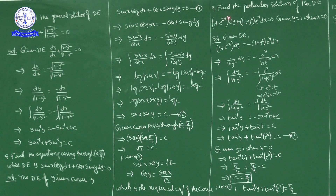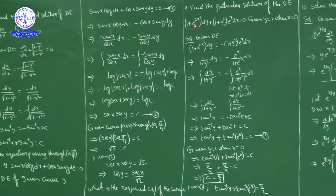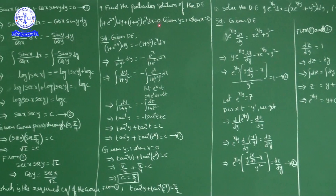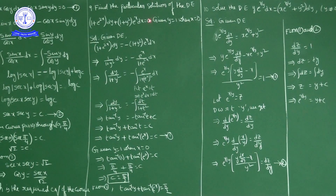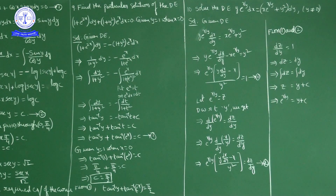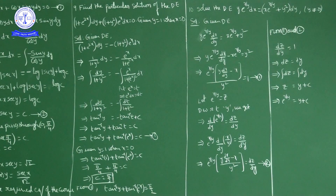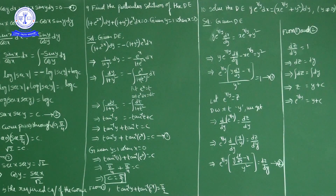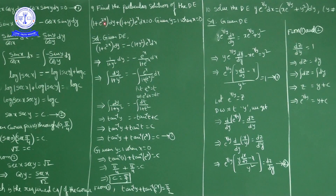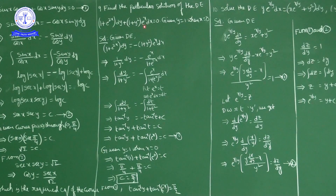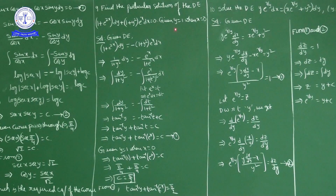Question number 9: find the particular solution of the differential equation (1 + e²ˣ)dy + (1 + y²)eˣ dx = 0, given y = 1 when x = 0. First find the general solution, then substitute x = 0 and y = 1 to find the particular solution.